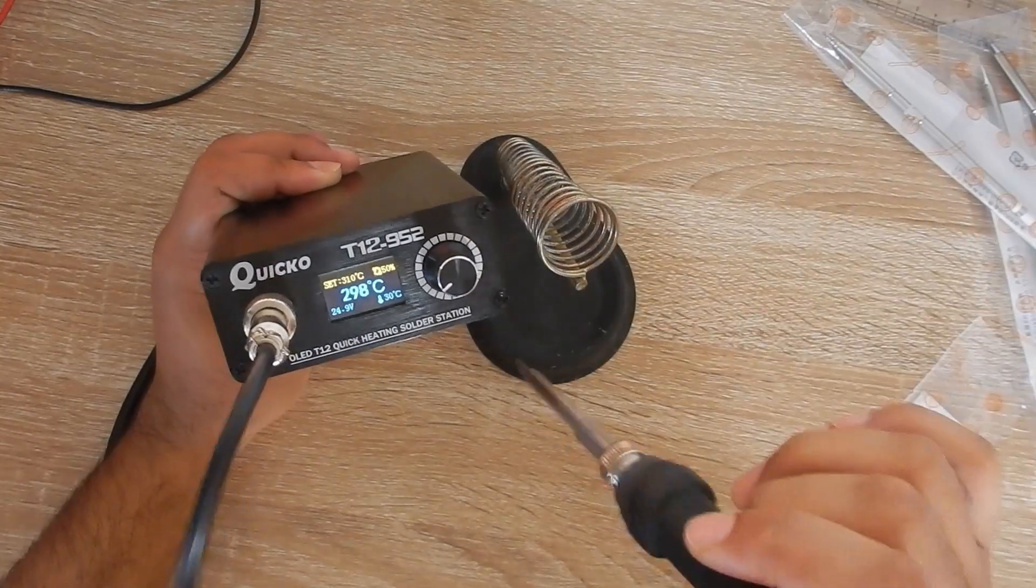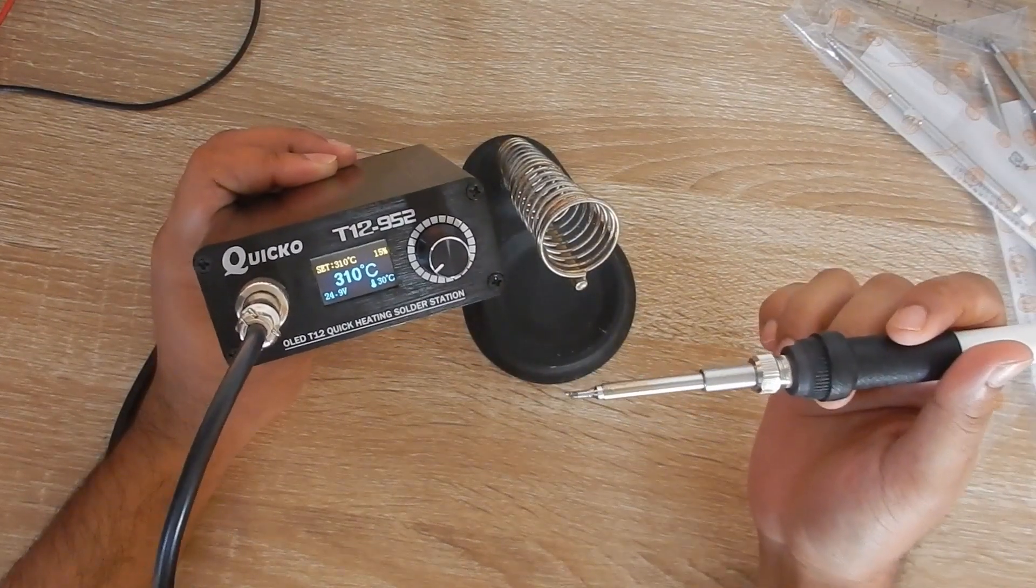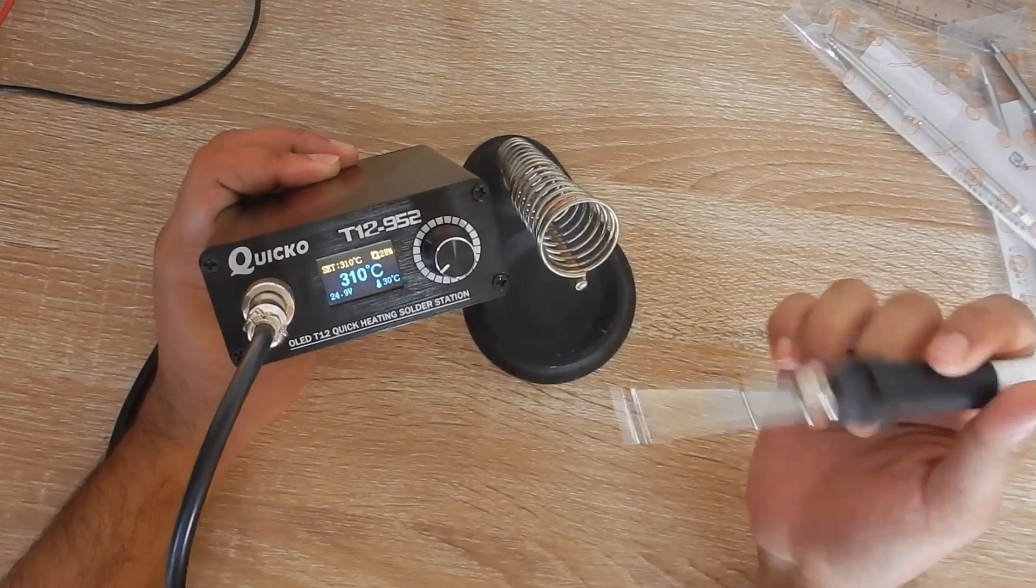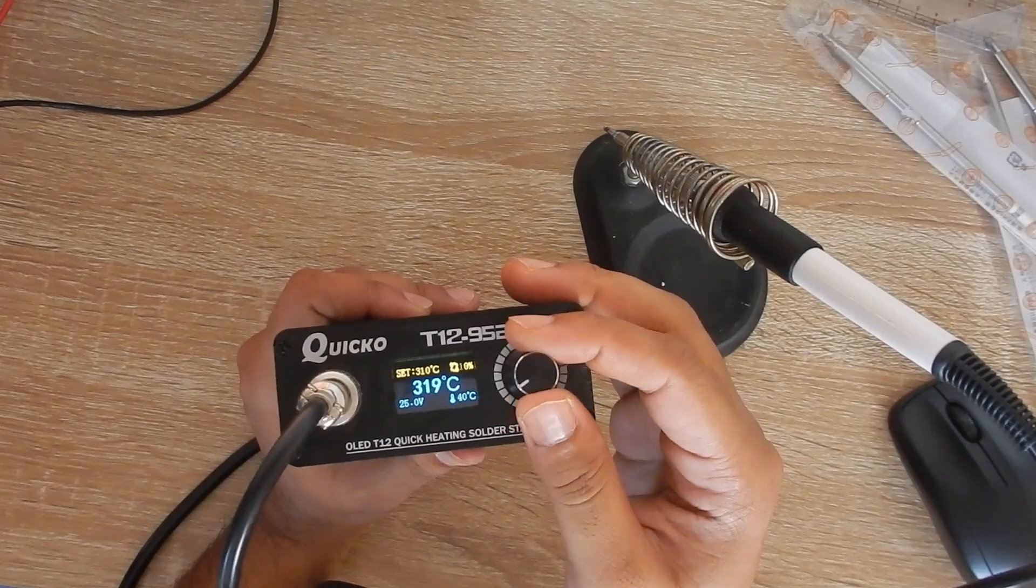There is a motion sensor inside the handle. If you keep it idle then it will go to standby mode and if you leave it long enough then the controller will turn off the iron.